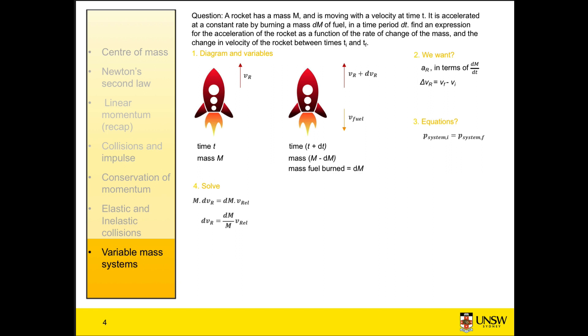Now all that remains is to find the change in velocity dv over the time period t final to t initial, and I can do that by integrating. When I solve that integral, I find my expression for the change in velocity equals v_rel times the log of the initial mass over the final mass.